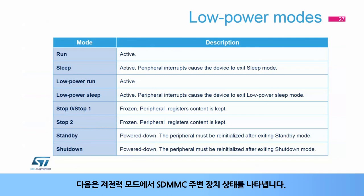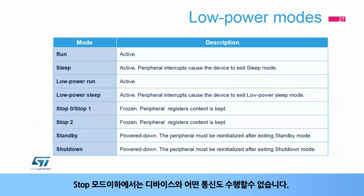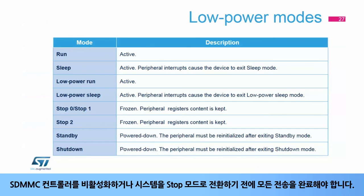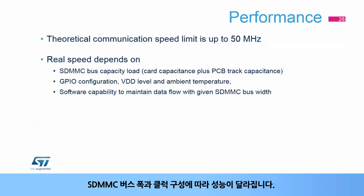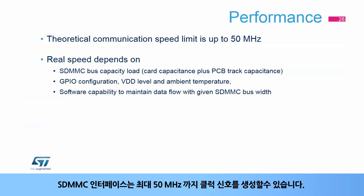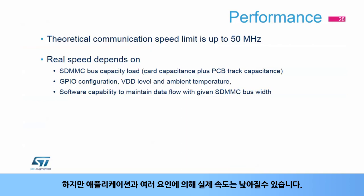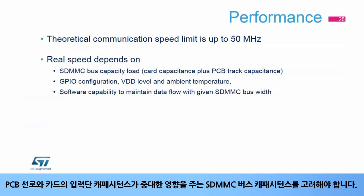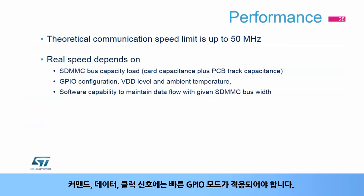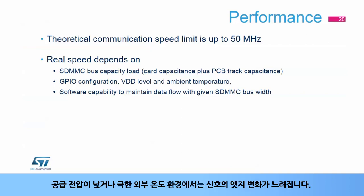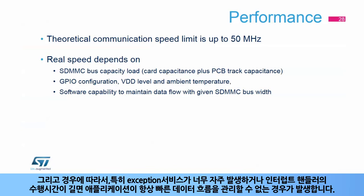Here is an overview of the peripheral status at specific low-power configuration modes. The device is not able to perform any communication in stop mode and lower. It is important to ensure that all transmissions are completed before the SDMMC controller is disabled or the system is switched down to stop. Performance depends mainly on the SDMMC bus width and clock configuration. The SDMMC interface can generate clock signals up to 50 MHz, but real speed can be decreased depending on several factors: SDMMC bus capacitance, PCB track and card input capacity, GPIO settings (fast GPIO mode should be applied on command, data, and clock signals), lower power supply voltages, extreme ambient temperatures, and overly frequent exception servicing or long time spent in interrupt handlers.